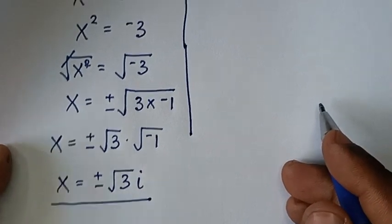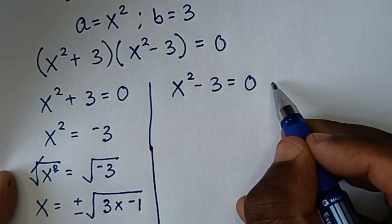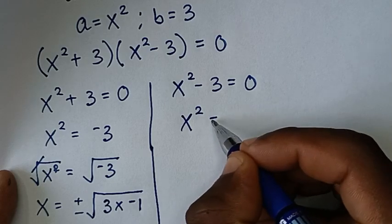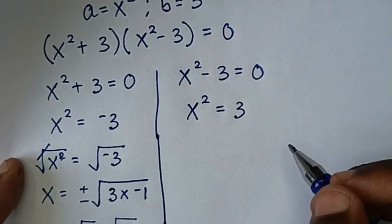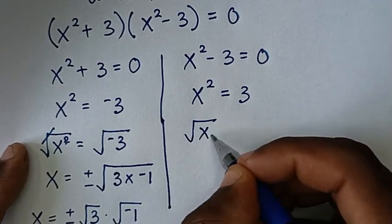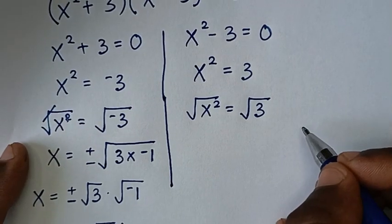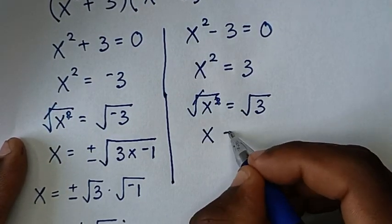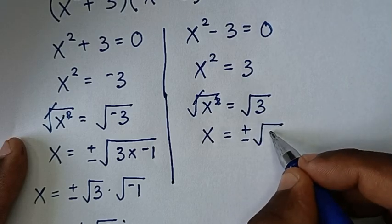Now let's solve the second solution. We take negative 3 to the right side, so x² = 3. Then applying square root to both sides, √(x²) = √3, which gives x = ±√3.